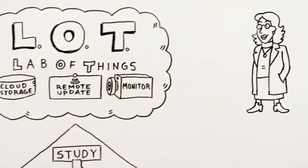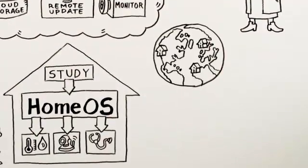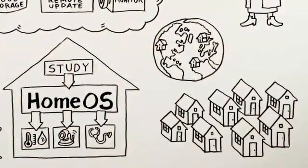Marie is another scientist studying aging in place. Like Albert, she uses Lab of Things to deploy sensors in many homes that she can easily monitor.